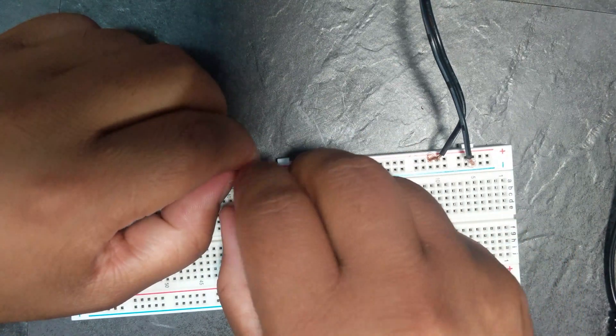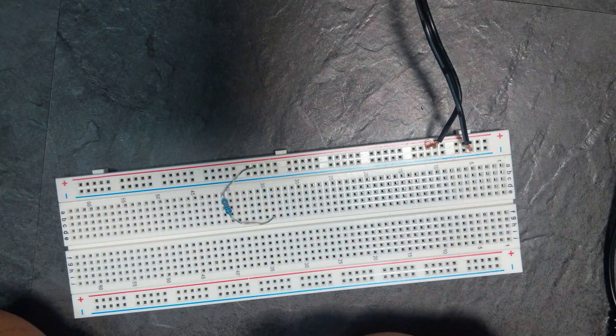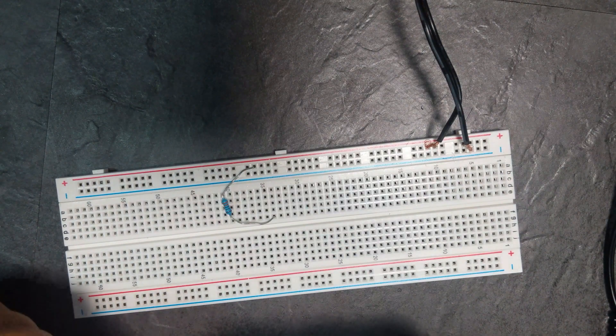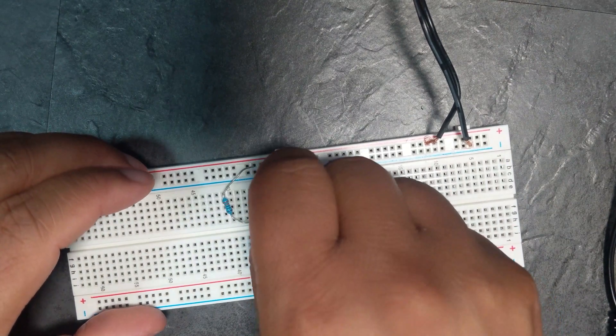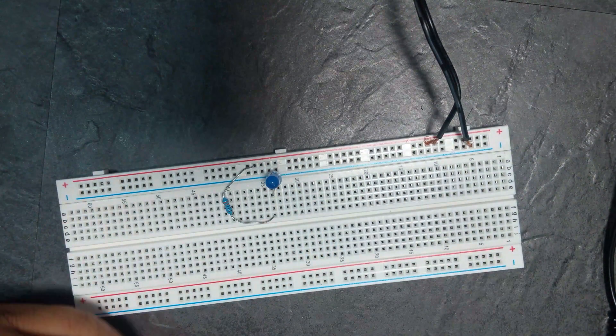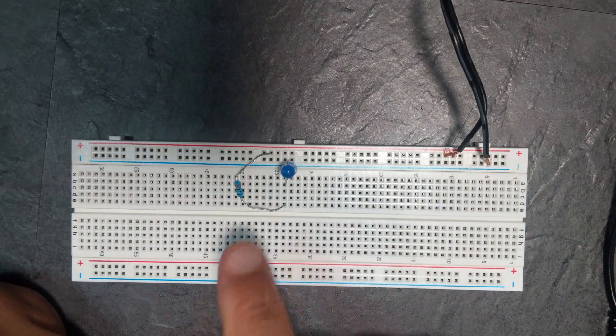We've got a resistor in there, and then let's go positive to negative. Nothing. So this means that either the power supply is not working or this is the wrong way around.